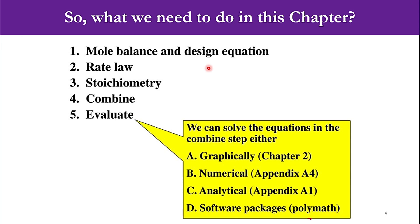That comes to our final part of today's lecture: what we need to do in this chapter. Remember five steps when solving isothermal reactors or chapter number five. Number one is mole balance and design equation, number two is rate law, number three is stoichiometry, number four is combine the first three and derive one particular equation, then evaluate it. If it's an algebraic equation, the solution will be very simple - just substitute the values. But if it's a differential equation, you have to solve it by various methods: graphically, numerically, analytically, or using software packages such as polymath.